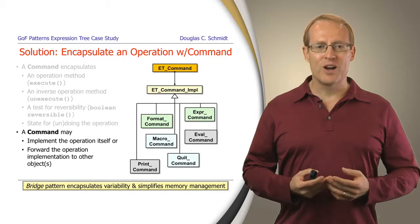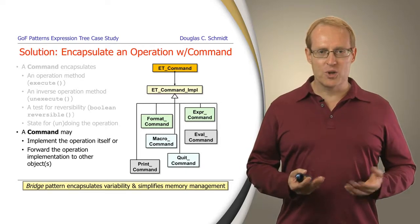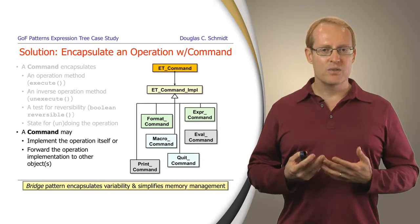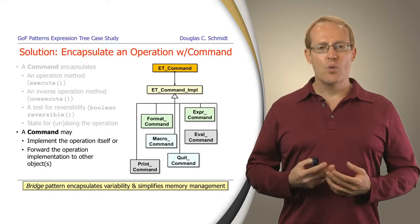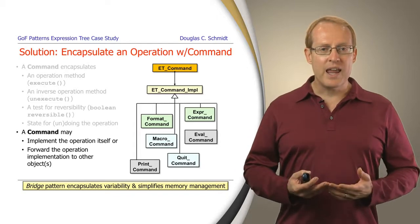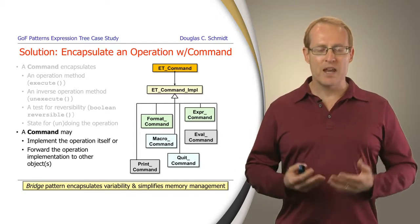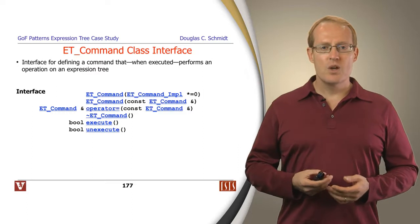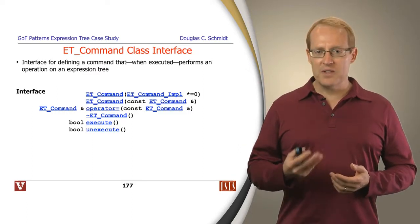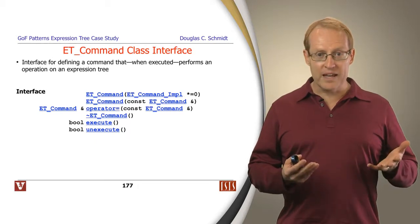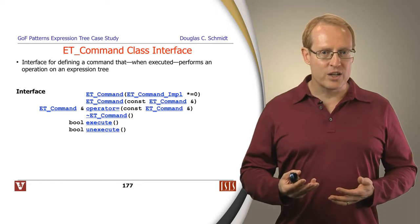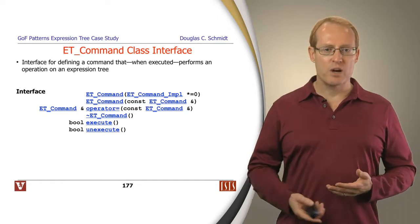As always throughout all our designs in this module, we're using the bridge pattern to mediate access to the underlying command structure. This allows us to handle variability in a more consistent way and also simplifies memory management in C++. Here is the expression tree command class interface — the interface for defining a command that, when executed, will perform an operation of some sort on the expression tree.